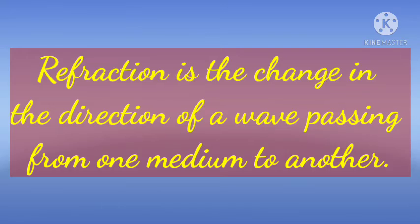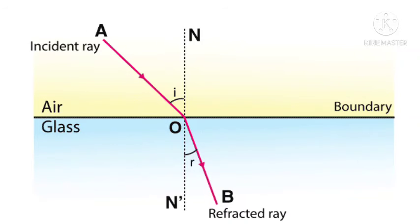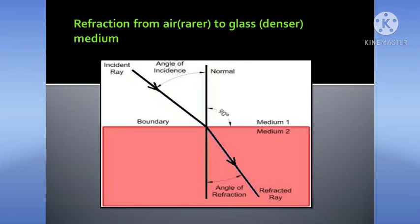When light enters a dense transparent medium, its speed decreases. So it takes a shorter path and rays of light bent at the interface of the two media. The bending of light when light travels from one transparent medium to the other is called refraction of light.